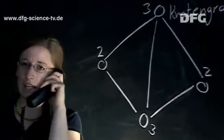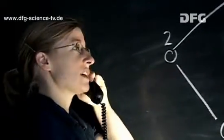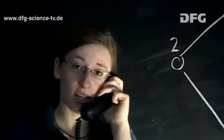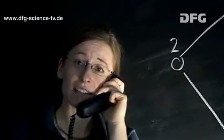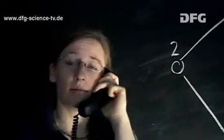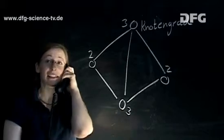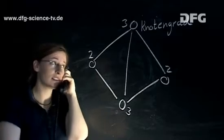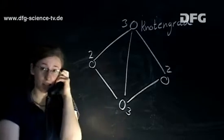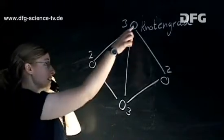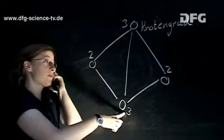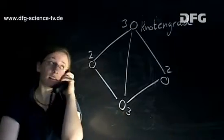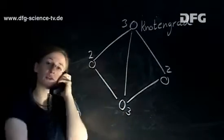So now we are going to prove a theorem which states that the number of nodes with an odd degree is always even. The number of nodes with an odd node degree — in other words, where an odd number of edges converge — this one and that one here, is even. As you can see, it's true. There are precisely two.